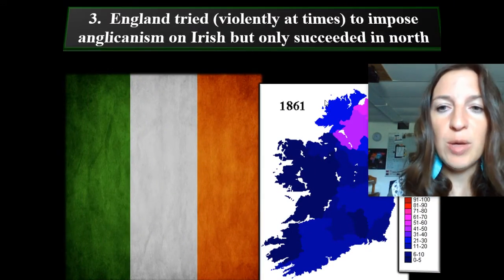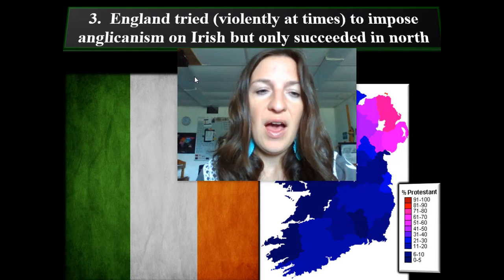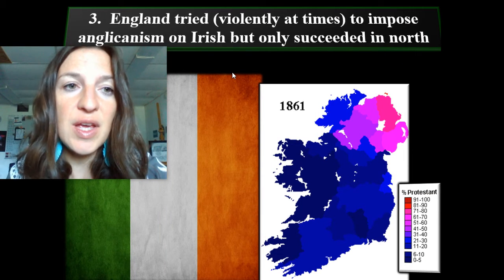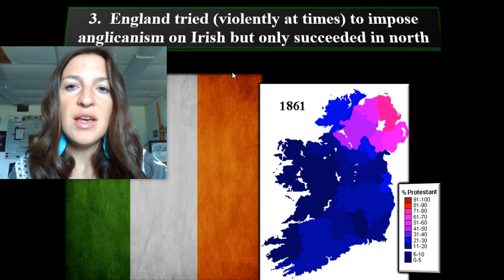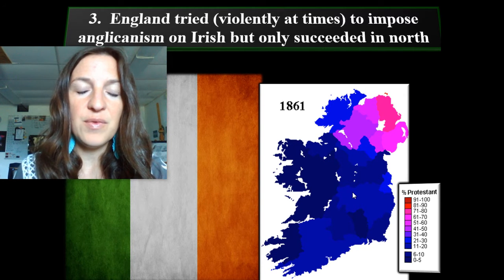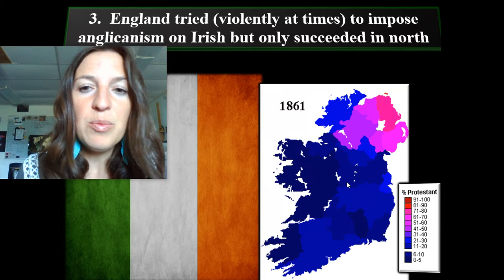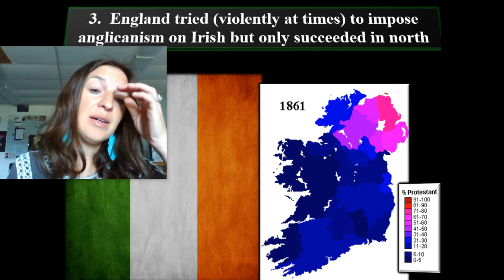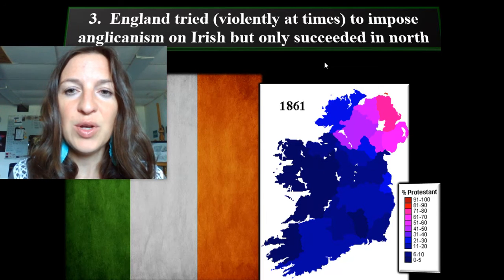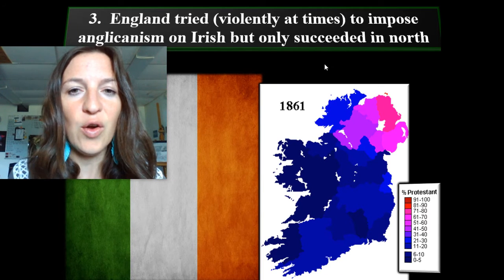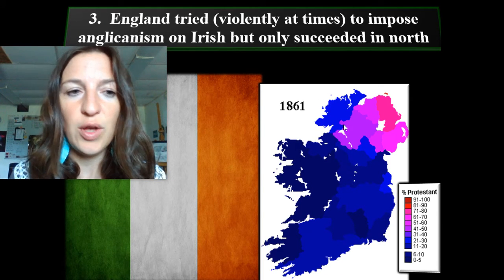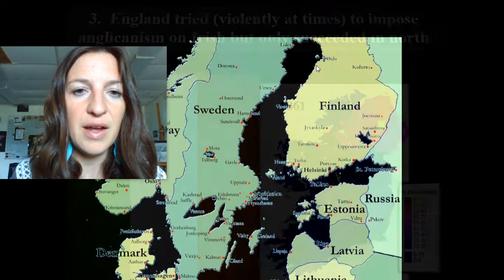Ireland has had some troubles, as you probably know. England tried violently at times to impose Anglicanism on the Irish, but only succeeded in the north. The Catholic people and the Protestant people have tended to fight in Ireland. There are some who can see that Christ unites us, but there has been a lot of fighting and civil unrest in Ireland.